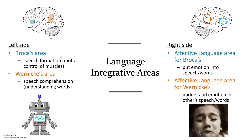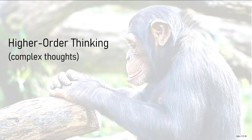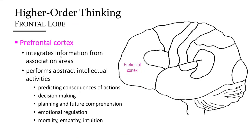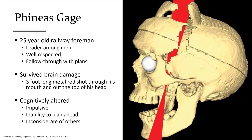To simplify: the left side of the brain functions very literally — Broca's area forms words and Wernicke's area understands words. The right side takes emotion into consideration and can add or understand emotion in the context of words. The ability to process complex thoughts including future planning is a human quality located in the anterior portion of the frontal lobe, where we derive personality traits, self-control, situational awareness, and our ability to plan ahead incorporating past experiences. This is the basis for most of human behavior and the field of psychology.